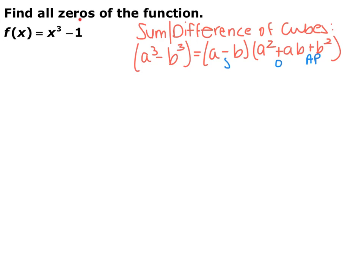This next example focuses on the sum or difference of cubes, which you need to be able to factor. If you have a perfect cube plus or minus a perfect cube — and 1 is a perfect cube since 1 cubed is 1 — you use the factoring pattern: the linear terms go in the first binomial, then the first linear term squared, plus the two linear terms multiplied together, plus the last linear term squared. The signs follow the SOAP mnemonic: Same, Opposite, Always Positive. Pause the video and factor x cubed minus 1.